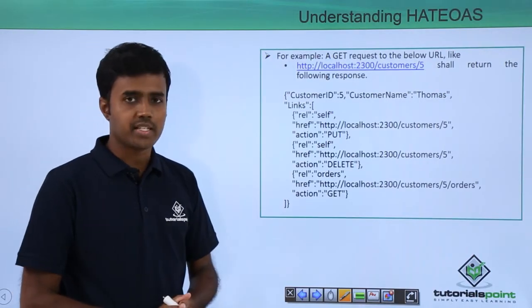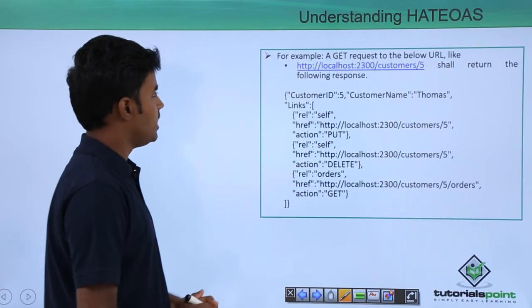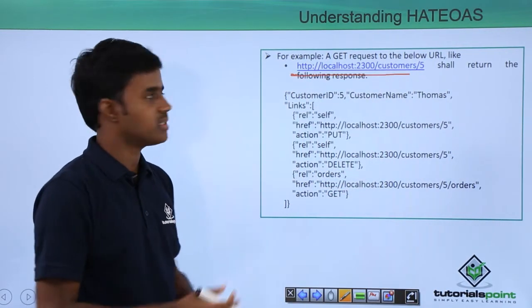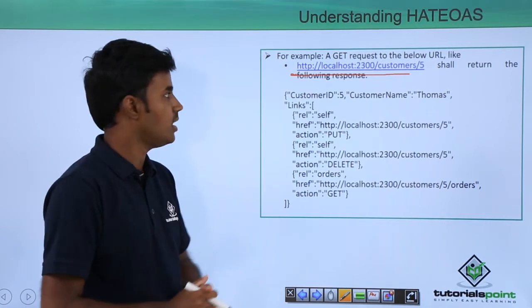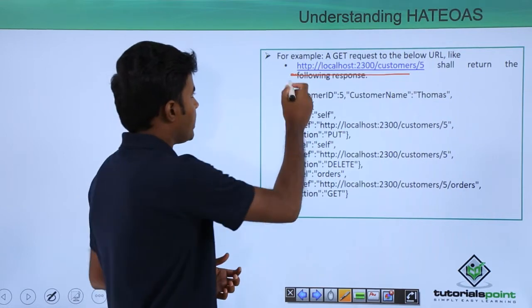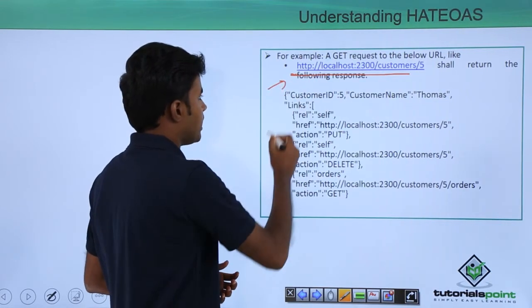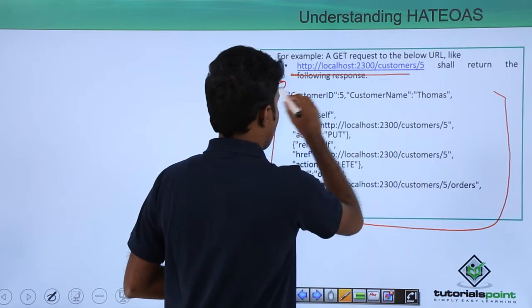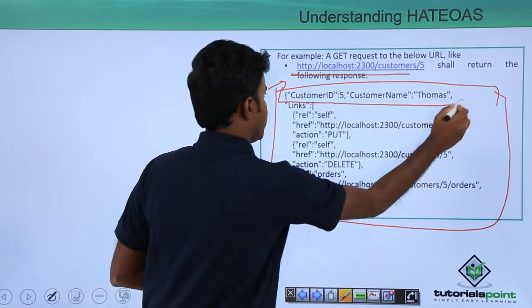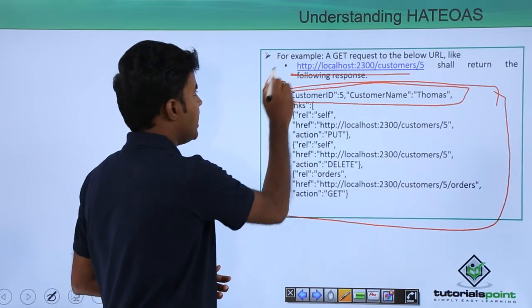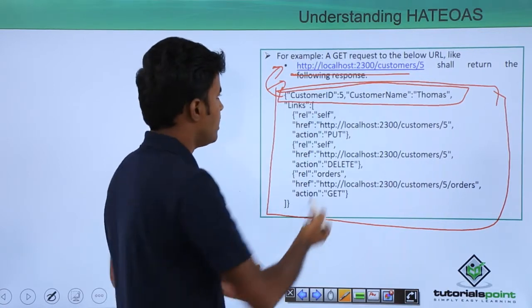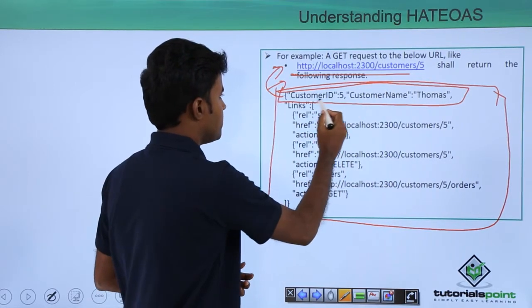Let me show you an example. If you have a GET request to, for example, localhost:2300/customers/5, you're trying to get a particular customer. The response can be in a form like this, where only this part is related to the request. The API is returning customer ID 5, customer name is Thomas.